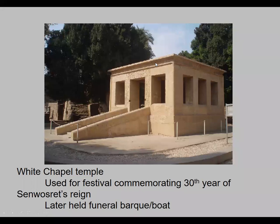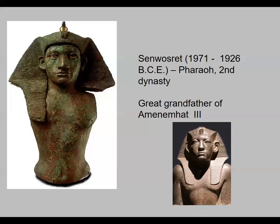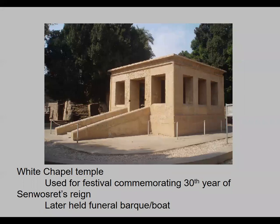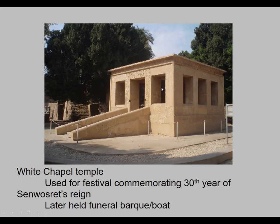Senusret was the pharaoh who united the upper and lower Nile into one country — not peaceably, but very violently. The temple where this was found is the White Chapel Temple, used for a festival commemorating the 30th year of Senusret's reign. Later it held a funeral bark or boat. During the festival, there were places for two thrones, and the pharaoh and his wife sat behind sheer coverings because they were considered gods.